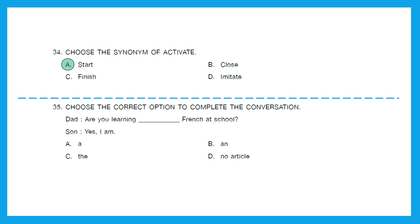Question 35: choose the correct option to complete the conversation. Dad: 'Are you learning dash French at school?' Son: 'Yes, I am.' We do not use any articles with the names of languages. So the answer is no article — 'Are you learning French at school?' Option D is the right answer. And with this we have successfully solved the Class 2 English Olympiad question paper of 2022 Set B.